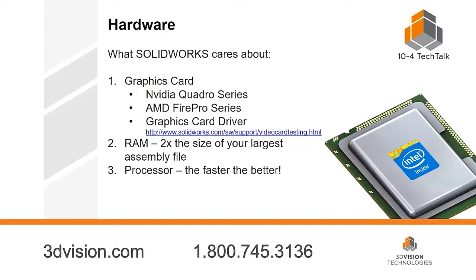With the processor, that's a little more tricky. What we usually say is when you're buying that computer from Dell or Lenovo, buy whatever processor you can afford at that time — get the fastest possible one. There are a lot of numbers out there about what processors do what, but SOLIDWORKS isn't very particular about the exact processor you need. Just make sure it's approved on the SOLIDWORKS website and buy the best one you can at the time.